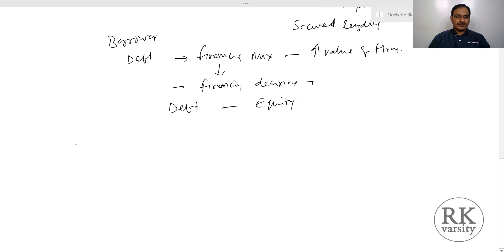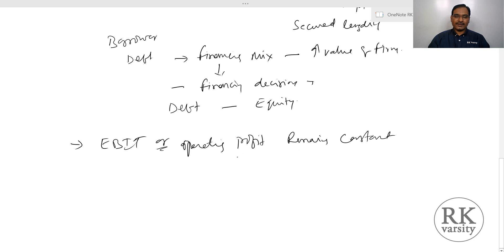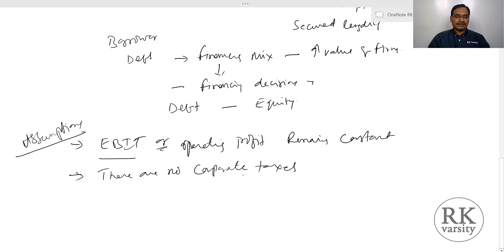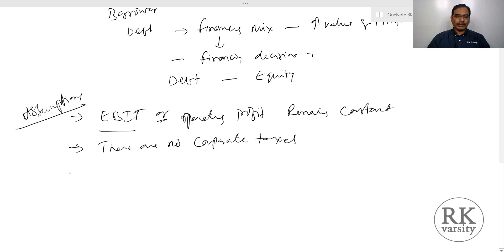The assumptions made in capital structure are: first, earnings before interest and tax, also called operating profit or EBIT, remains constant — irrespective of your financing mix, whether 80% debt and 20% equity or 50-50, your EBIT remains constant. Second, there are no corporate taxes — we assume a world where no corporate taxes exist, although later we relax this assumption when discussing certain theories. Third, the cost of debt is cheaper than the cost of equity.